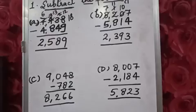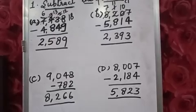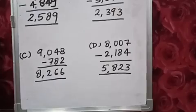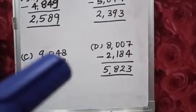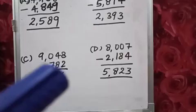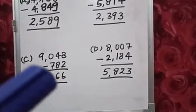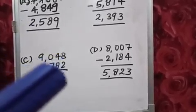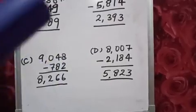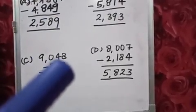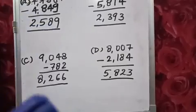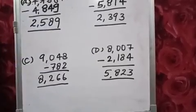Now 4 minus 8 — we need borrow here. But the next number is 0, so we can't borrow anything from 0. First we will borrow from 9. After borrowing from 9, this 0 will become 10. Then we will borrow from 10, so 4 will become 14, 10 will become 9, and 9 will become 8.